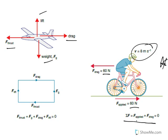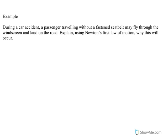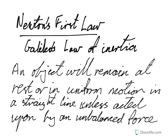Here's an example — these are fairly common applications of Newton's First Law, and there have often been similar questions in year 12 exams. During a car accident, a passenger traveling without a fastened seat belt may fly through the windscreen and land on the road. Explain using Newton's First Law of motion why this will occur. Newton's First Law says an object will remain at rest or in uniform motion in a straight line unless acted upon by an unbalanced force.